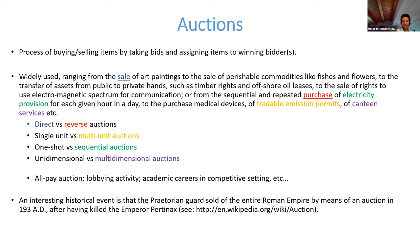In the example just considered, the auctioneer is used to sell an item — we define this as a direct auction. Auctions can also be used to purchase items, as is the case in public procurement, and in that case we call them reverse auctions. In a reverse auction or public procurement auction, the bidder offering the lowest price wins the right to sell the item to the buyer.